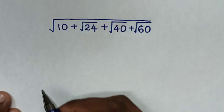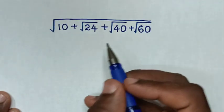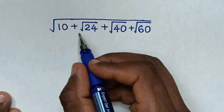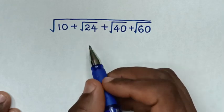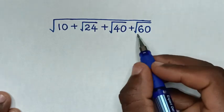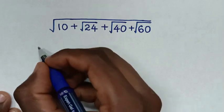Hello! How to solve square root of 10 plus square root of 24 plus square root of 40 plus square root of 60?